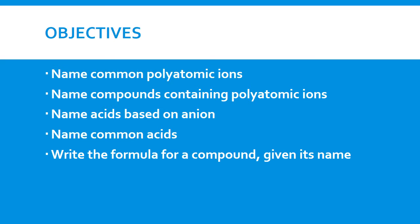Here are the objectives: to name common polyatomic ions, to name compounds that contain polyatomic ions, name acids, and we're going to name the acids based on the anion. We're also going to name common acids, and we're also going to write the formula for a compound given its name.